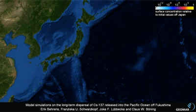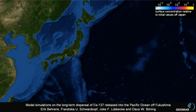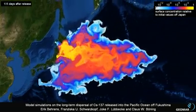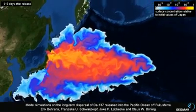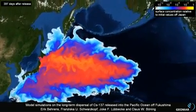The following animation shows the spreading of our dye at the ocean's surface. The color represents the concentration of the tracer relative to the initial concentration in the coastal area of Fukushima at the end of the injection period. The tracer invades the highly energetic Kuroshio regime within the first weeks after the release and starts spreading meridionally due to the eddies dominating the flow field in this area.